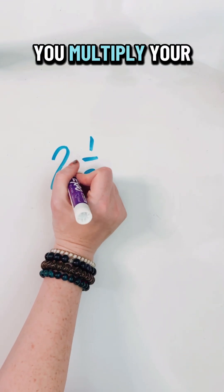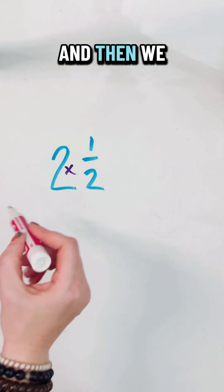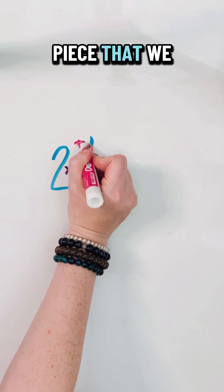Two times two. You multiply your denominator times your whole number, and then we have to add in this extra piece that we have left over.